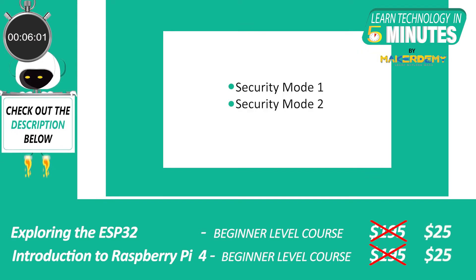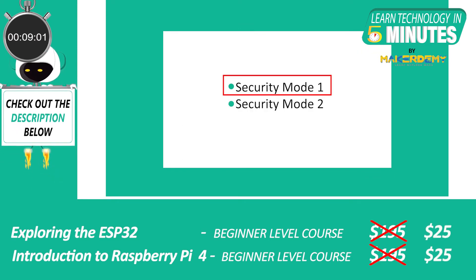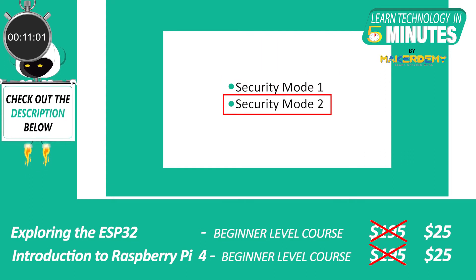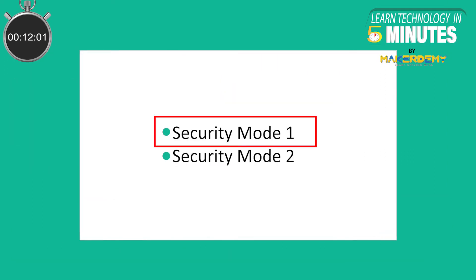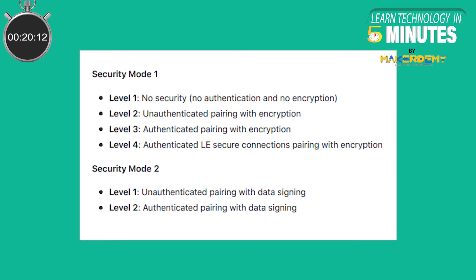There are two security modes in Bluetooth Low Energy: Security Mode 1 and Security Mode 2. Security Mode 1 is concerned with encryption, whereas Security Mode 2 is concerned with data signing. Now let's look at the different levels of each mode and what it means.